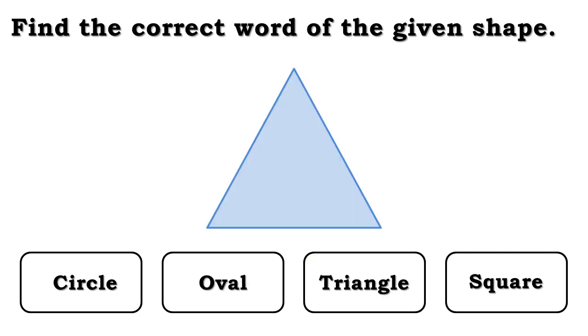Here, the words are circle, oval, triangle, square. But the correct word is triangle.